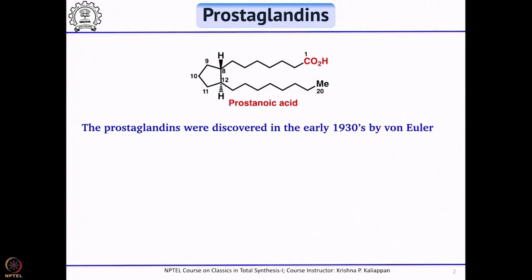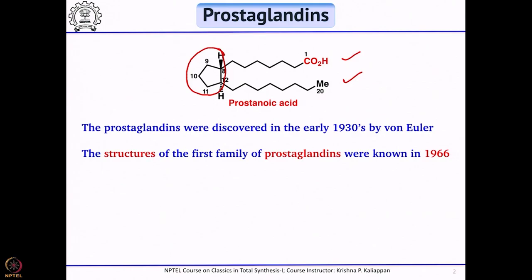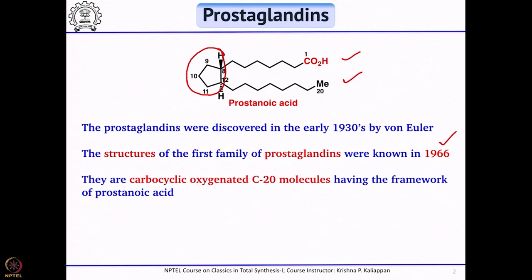The prostaglandins, as you can see, have a cyclopentane with two side chains. This is the core structure of prostaglandin which we can call prostanoic acid. Most of these prostaglandins were discovered and reported in the early 1930s by von Euler. It was not easy to elucidate the structure of all these prostaglandins — it took about more than 35 years to elucidate the correct structure. Once the correct structure was identified, a lot of action took place from synthetic chemists to synthesize this compound.